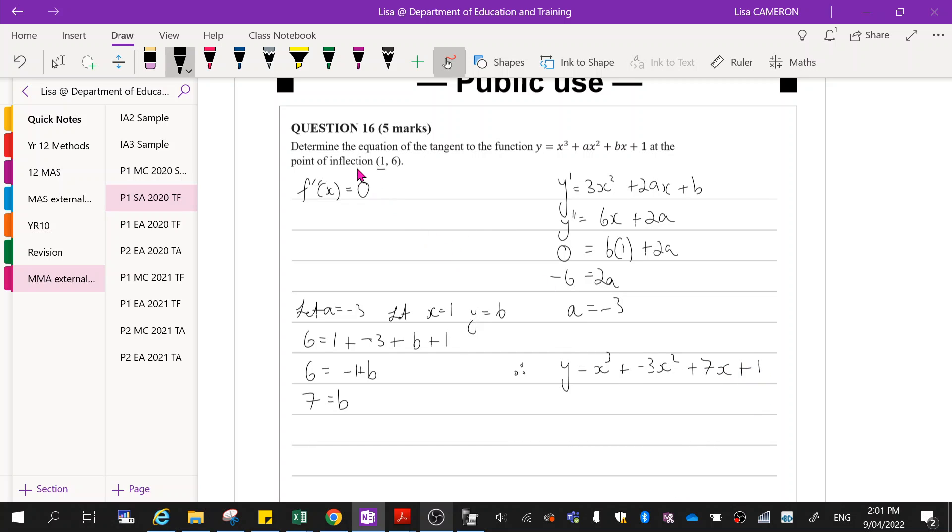But it's asking me to determine the equation of the tangent to that function. So now if I calculate y dash, that's going to give me 3x squared minus 6x plus 7.